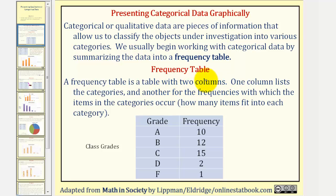A frequency table is a table with two columns, as we see here. One column lists the categories and the other for the frequencies with which the items in the categories occur, meaning how many items fit into each category.